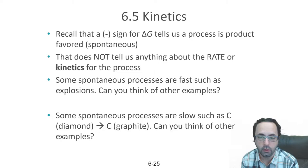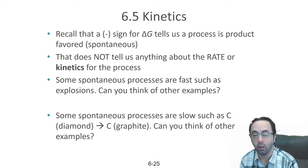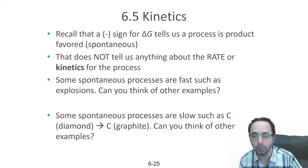Delta G doesn't tell us how quickly that reaction will happen, which is another very important thing. A reaction that goes very slowly is not going to produce a lot of products, even if it is spontaneous. Rusting, for example, is generally a slow process — but it is spontaneous. If you leave a piece of iron out, it will rust; it'll just take a long time.